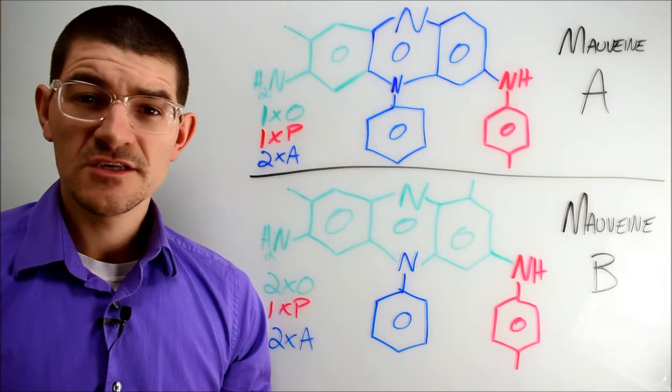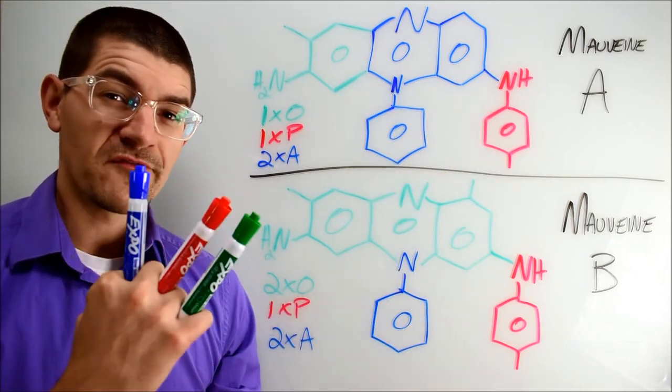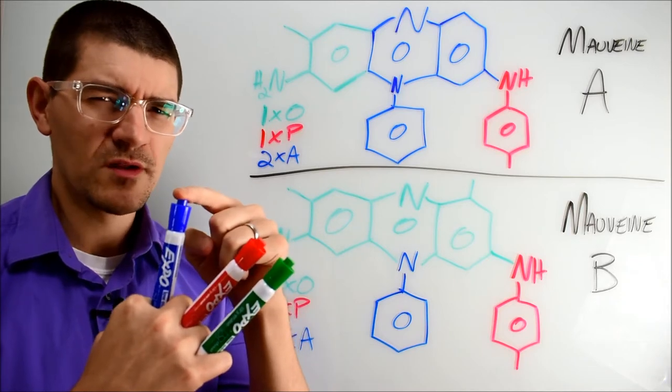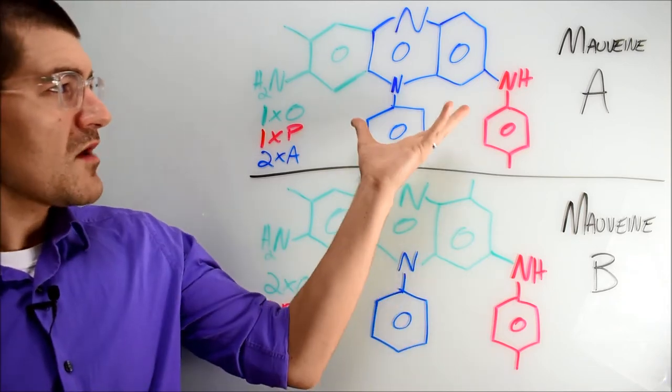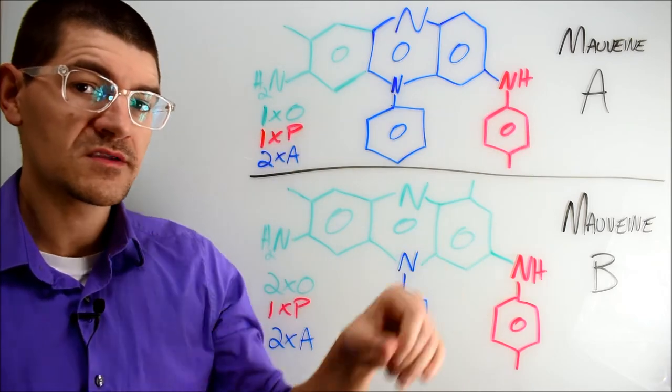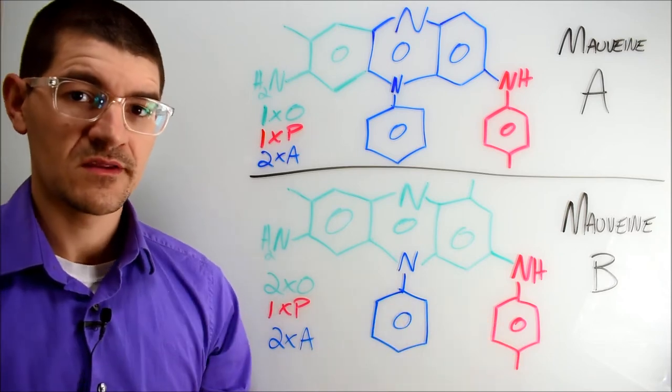The two main constituents of Perkin's mauveine soup are these compounds here, mauveine A and mauveine B. Using our friendly impurities, green ortho-toluidine and red para-toluidine, with a little bit of blue aniline splashed in, we can see mauveine A has two blue anilines, one green ortho-toluidine and one red para-toluidine, while mauveine B has two ortho-toluidines, one aniline and one para-toluidine.